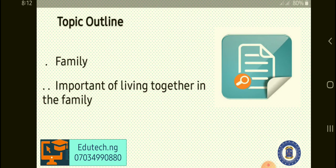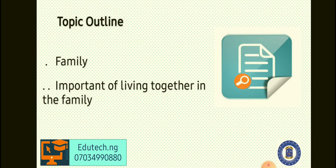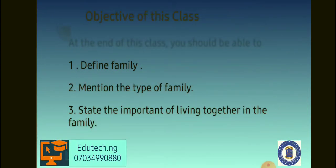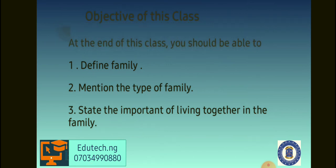Our topic outline for this lesson will be: one, family; and two, the importance of living together in the family. The objective of this class: at the end of this class, we should be able to define family, mention the types of family, and also state the importance of living together in the family.